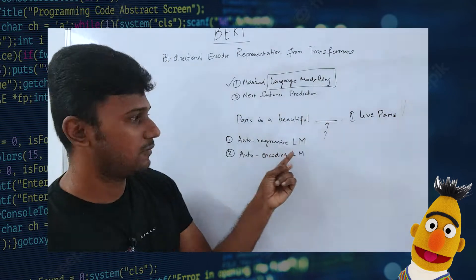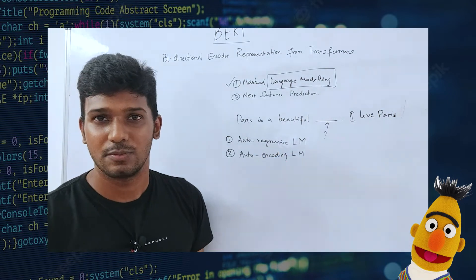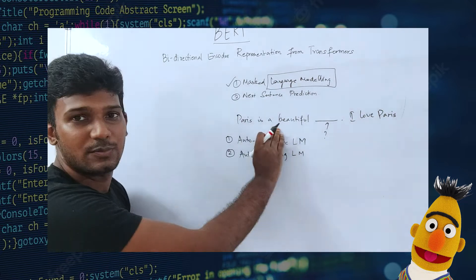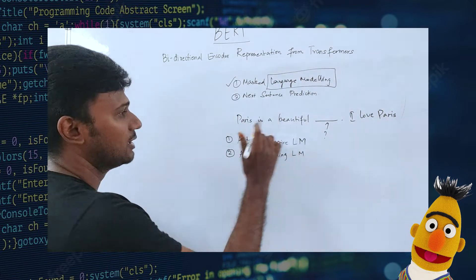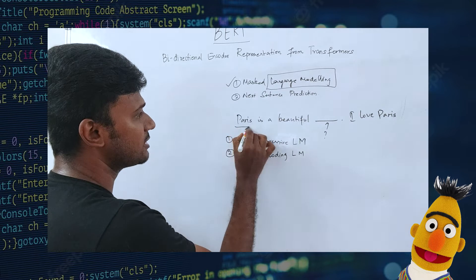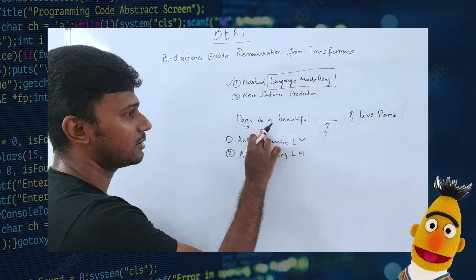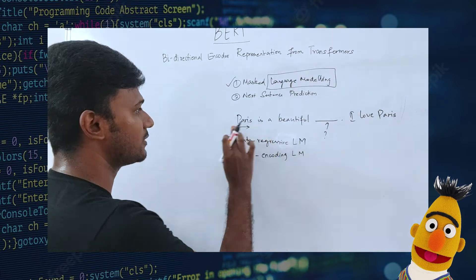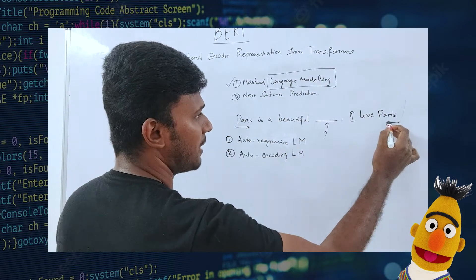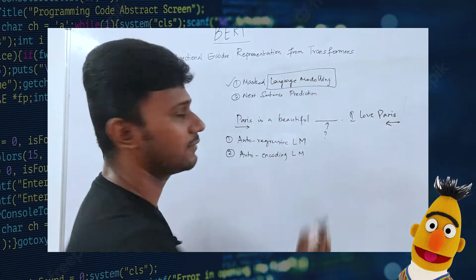Auto-regressive language modeling is nothing but given an input sentence, it is going to read the sentence either in one direction — it can be either the forward direction which is from left to right, or in the backward direction which is from right to left.